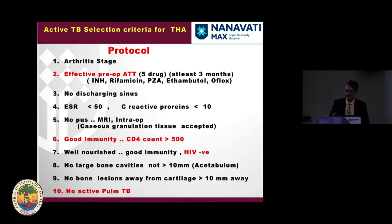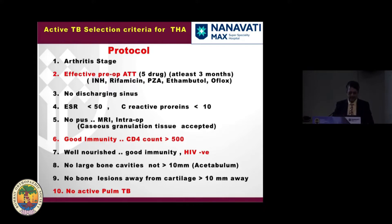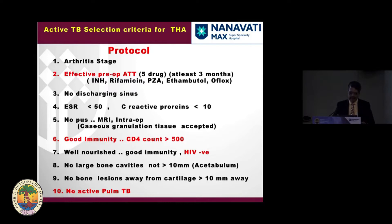These are my 10 commandments from my study. First, operate at the arthritic stage, because synovitis is completely reversible. You must give effective pre-operative anti-TB medication — initially five drugs for three months, then nine months. A patient with a discharging sinus should not be accepted, because when there's a discharging sinus, outside septic organisms are mixed in — it becomes like septic arthritis. So no discharging sinus should be present pre-operatively. At the end of three months of anti-TB medication, the ESR should be less than 50.